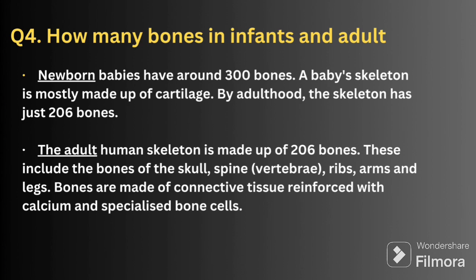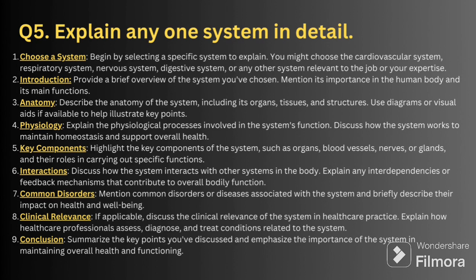The fifth question is: explain any one system in detail. When explaining a system, first choose a system, then give an introduction or overview of the system, then discuss the anatomy — what are the parts. Next, physiology — how the system works. Then cover the key components: organs, blood vessels, glands related to that system. Then explain the body mechanism. Finally, end with common disorders and procedures done in the body.